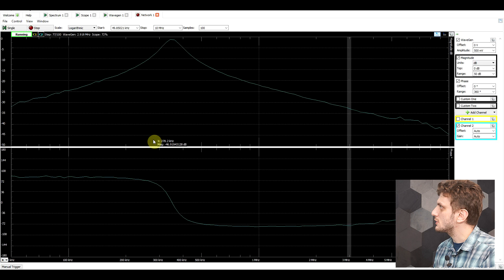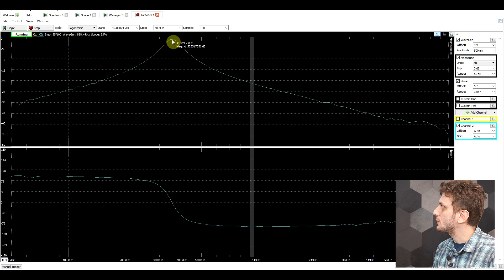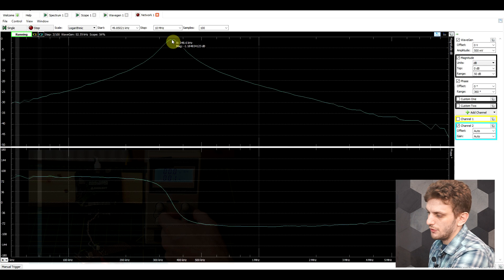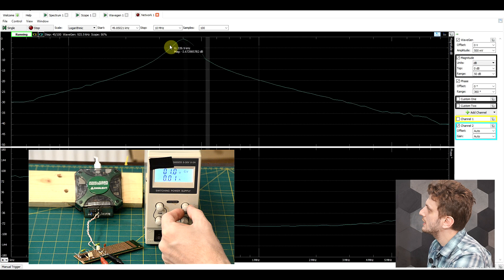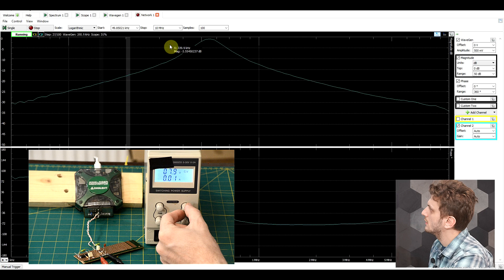And these are then connected to my analog discovery circuit to measure the impedance. So this is what it looks like. So right now we have zero DC bias voltage. The varicaps are at their highest capacity value. And we see that we have a resonance frequency of around 350 kilohertz.